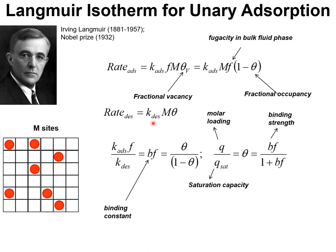At equilibrium, we may equate the rate of adsorption to the rate of desorption and derive the following expression: k_ads times F, the partial fugacity in the bulk fluid phase, divided by k_desorption. The ratio of the adsorption rate constant to the desorption rate constant can be termed the binding constant b. So b times F equals theta divided by 1 minus theta. This expression may be rewritten to explicitly relate the fractional occupancy to the partial fugacity in the bulk fluid phase.